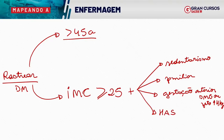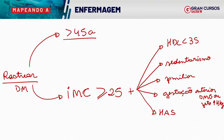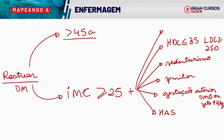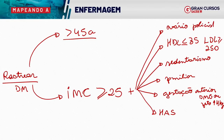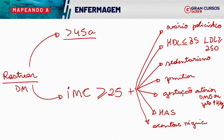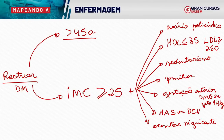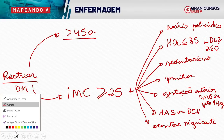Outros critérios para rastreamento: pessoas que tenham hipertensão; alteração de colesterol — HDL menor ou igual a 35 e LDL maior ou igual a 250; ovário policístico; acantose nigricante, que são alterações na pele que ficam mais escuras em alguns lugares; e pessoas com doença cardiovascular ou cardio-cérebro-vascular.